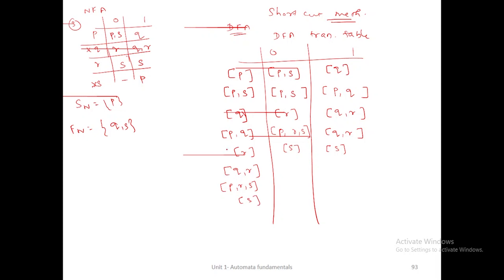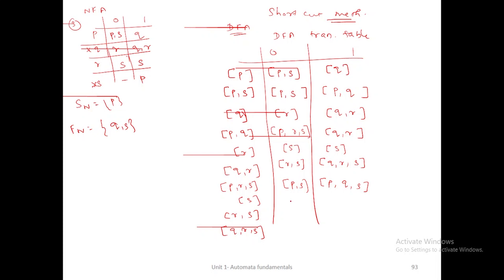p,r,s is not available in the list, so you write {p,r,s}. {q,r} is already available. Then for r: r's answer is given. S is a new DFA state, so write it here. Refer q,0 and r,0 combined: q,0 is r and r,0 gives the answer {r,s}. For input 1: q,1 is {q,r} and r,1 gives the answer {q,r,s}. Combine those values. r,s is not available, so write it. Then for p,r,s: combine p,0, r,0, s,0 — the answer is {p,s}. Combine p,1, r,1, s,1 — the answer is {p,q,s}. {p,s} is already available, but {p,q,s} is not, so write it here.